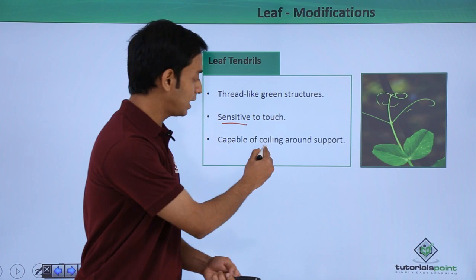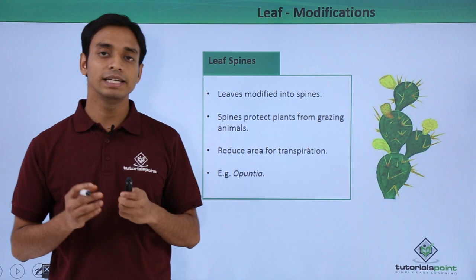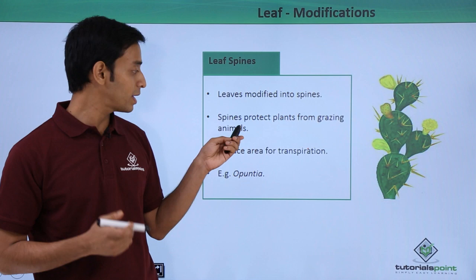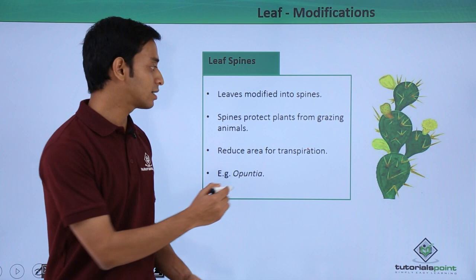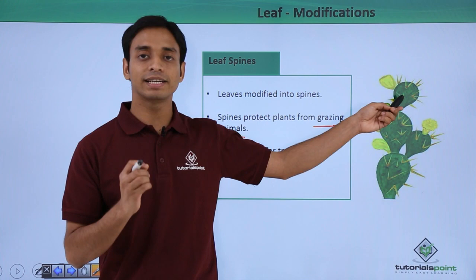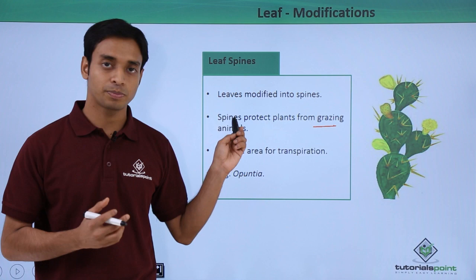The next type is known as leaf spines. These leaves are modified into spines — hard, needle-like structures. As you can see here, these spines protect the plant from grazing animals. Since they are very pricking structures, grazing animals cannot feed on plants that have these spines.